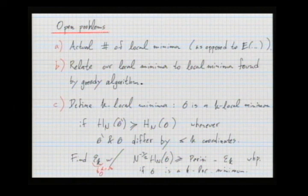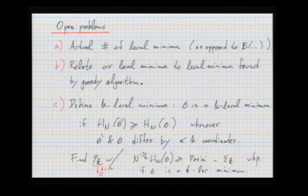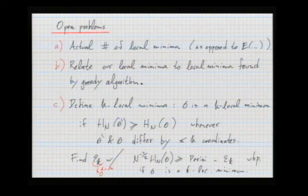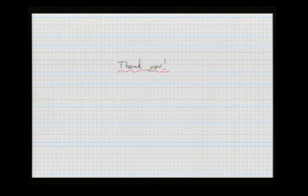The open problem I find most interesting involves k-local minima: a configuration is k-locally minimal if flipping any k spins does not decrease its energy. The bold conjecture is that as k grows, the k-local minimum energy approaches the Parisi solution. Finding the right constant k for which this happens — and how large k needs to be to approach the true global minimum — would be a very interesting challenge. Thank you very much.